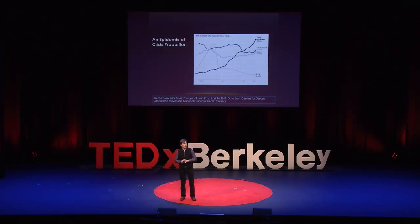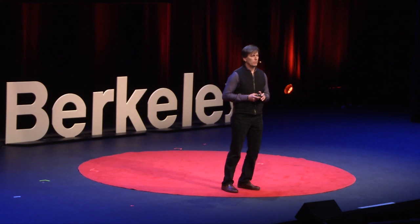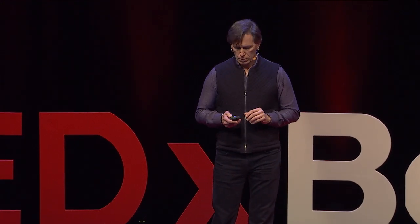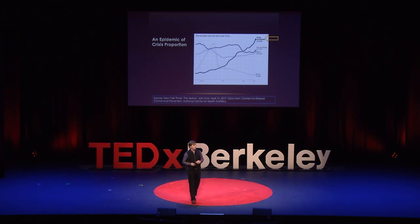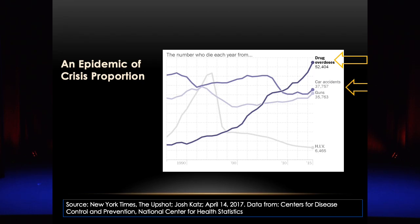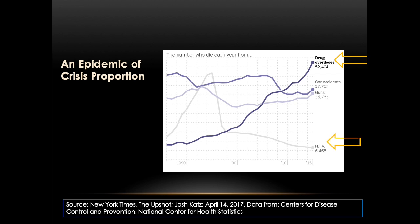For the first time in 100 years, since the great influenza pandemic of 1918, life expectancy at birth for an infant born today has gone down three years in a row. Why is that? Because we are facing the worst drug crisis in modern history. Deaths due to drug overdoses now exceed deaths due to car accidents, gun violence, and even HIV at the height of the 1990s HIV epidemic.